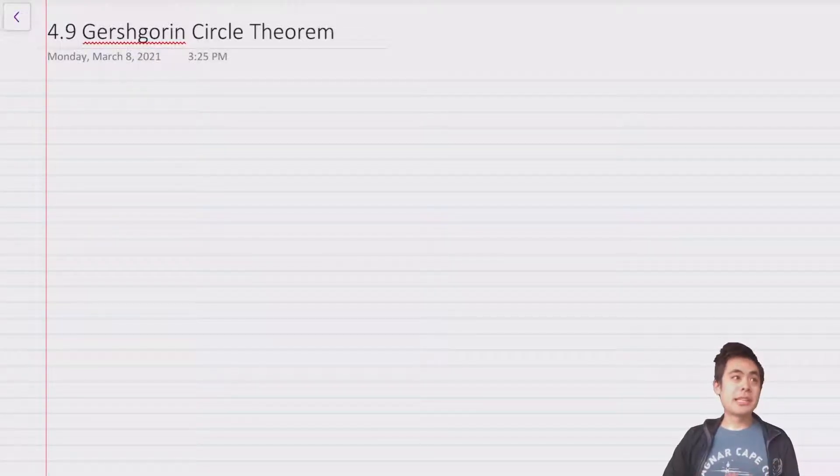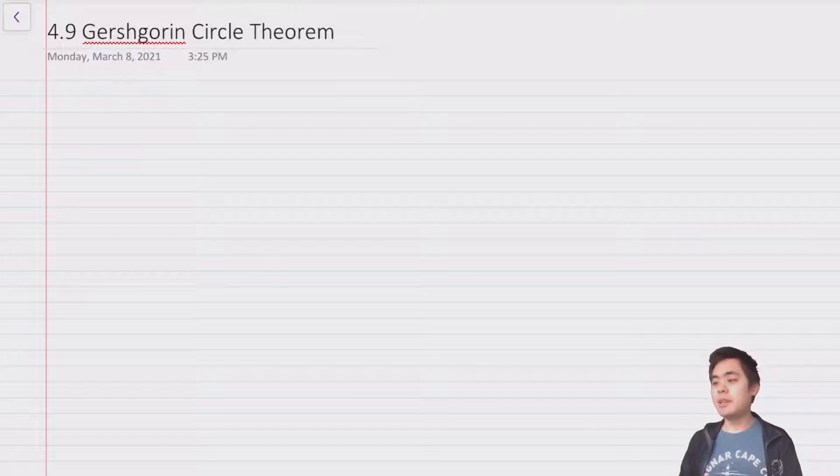Hi everyone. So as I mentioned in the last video, we are going to be talking about the Gershgorin circle theorem. If you recall, we had the Routh-Hurwitz criteria, which gave necessary and sufficient conditions for the roots of a polynomial having negative real part. But those are somewhat hard to work with.